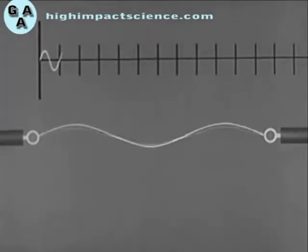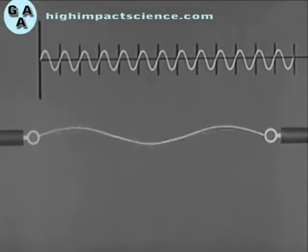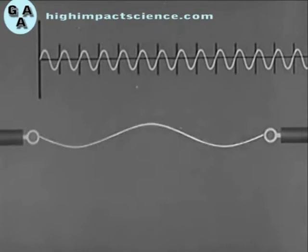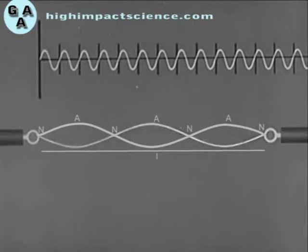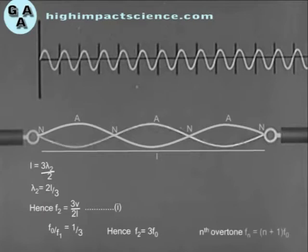Second overtone (third harmonic). This is obtained by plucking the string in the middle while touching it one third of its length from one end. Here L = 3λ₂/2, so λ₂ = 2L/3, and hence F₂ = 3V/2L = 3F₀. This is the third harmonic. It follows that the nth overtone is given by Fₙ = (n+1)F₀.